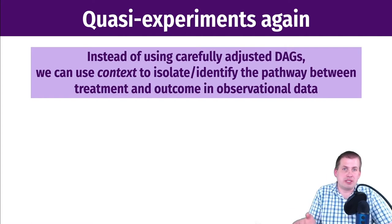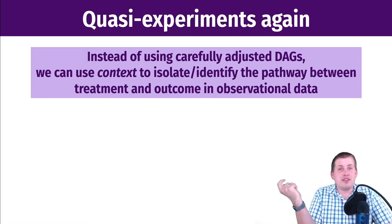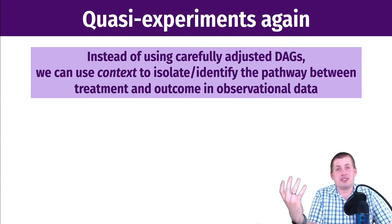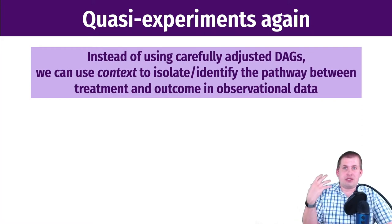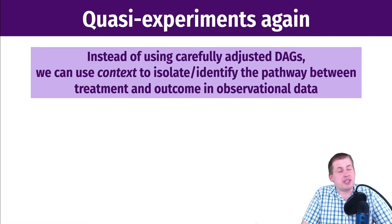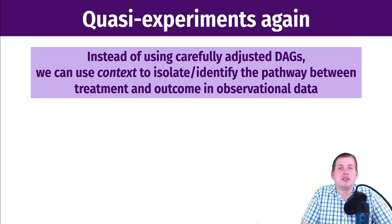Those approaches don't need a diff-in-diff or regression discontinuity situation — you can use whatever observational data you have. The disadvantage is that if you have a DAG and apply it to some dataset, you have to assume every single column is observable. If you have unobservable things in your DAG that don't exist in your dataset, you can't do the adjustment or inverse probability weighting — which is why we turn to quasi-experiments.